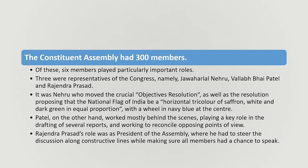The Constituent Assembly had 300 members, of which six members played a very important role. Among these six, three were from the Congress party: first, Jawaharlal Nehru; second, Sardar Vallabhbhai Patel; and third, Rajendra Prasad. Jawaharlal Nehru moved the Objectives Resolution.